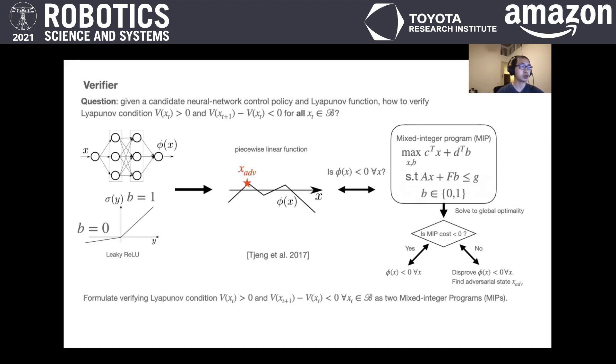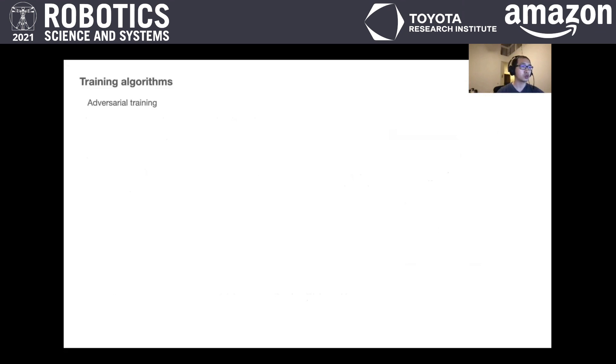In this paper, we formulate verifying the Lyapunov conditions as solving MIPs. Using our verifier, we jointly train the controller and the Lyapunov Function with two approaches. In the first approach, we start with the candidate controller and Lyapunov Function. The MIP verifier checks if the Lyapunov conditions are satisfied. If yes, then we declare success.